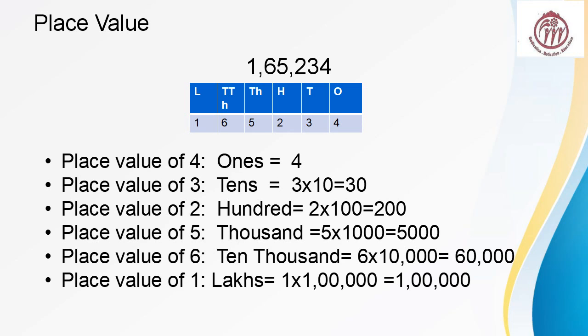Now place value is the value of the digit according to its place position. Place value of 4 is 4 ones, that is 4. Place value of 3 is 3 tens, that is 30. Place value of 2 is 2 hundreds, that is 200. Place value of 5 is 5 thousands, that is 5000. Place value of 6 is 6 ten thousands, that is 60,000. Place value of 1 is 1 lakh. You must remember 1 lakh is 1 and 5 zeros.